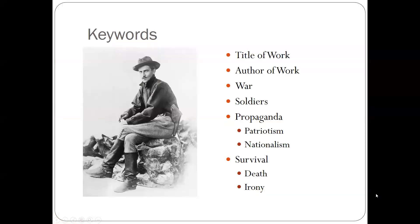Before we go to the databases, it's important to come up with a list of keyword terms related to your topic. Your first keywords can simply be the title of the short story or poem that you read, or the author. You can also search about war and soldiers, propaganda, patriotism, survival — all of these will work for your paper topic. It's really a matter of what you're interested in. Combining keyword terms will help you narrow down your search.